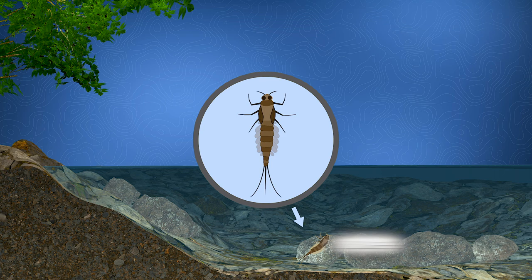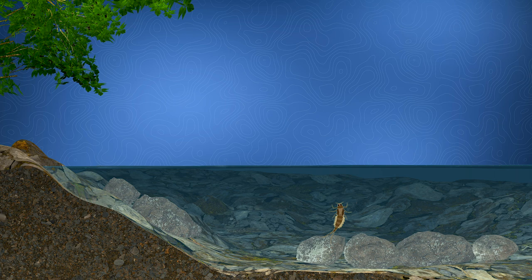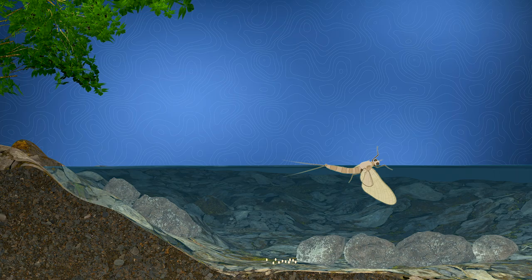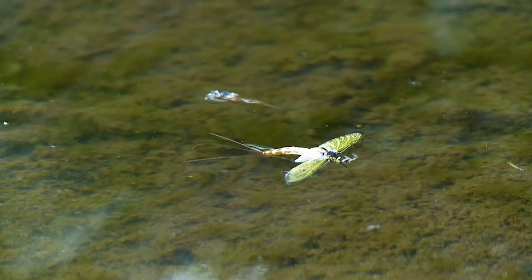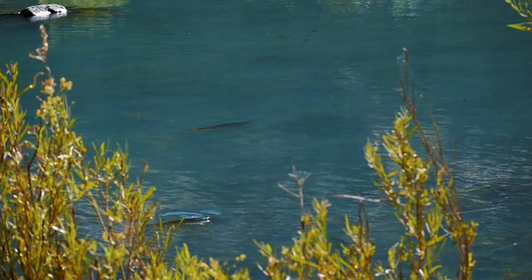Mayfly larvae rise to the surface to hatch into what we call a dun, or sub-adult. These flies then fly into nearby trees, molt, and turn into the full adult called a spinner in a day or two, which then return to the water and lay their eggs. Trout eat the nymphs throughout the season, but they only have access to the adults when they rise to the surface, flutter around after hatching, or return to lay eggs — and when they do, the adults concentrate in vast numbers and trout feed with abandon.